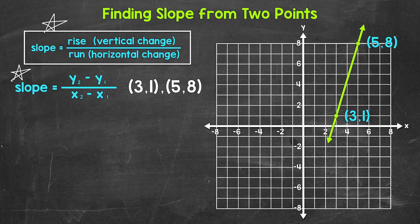Our points are at (3, 1) and (5, 8). We need to pick our first point and our second point. It doesn't matter which is which — we will get the same slope either way. I typically like working from left to right, so let's use (3, 1) as our first point, x1 and y1, and then (5, 8) as our second point, x2 and y2.